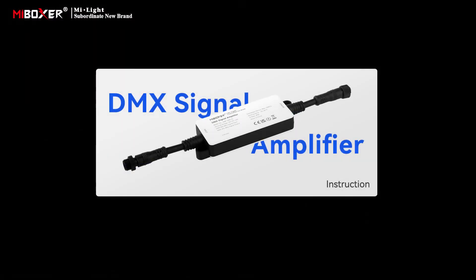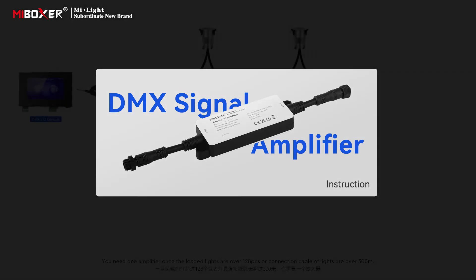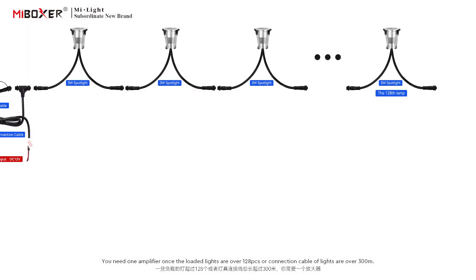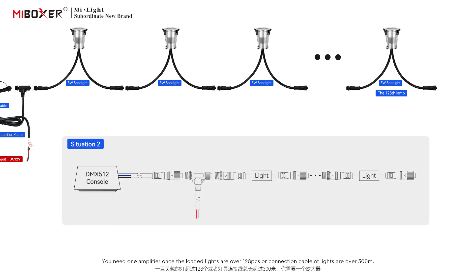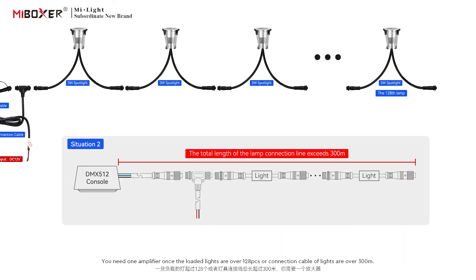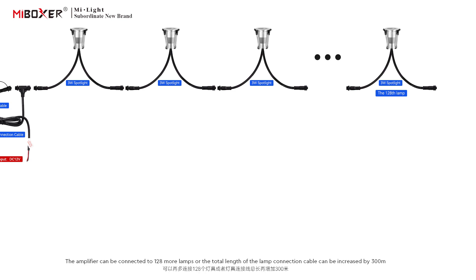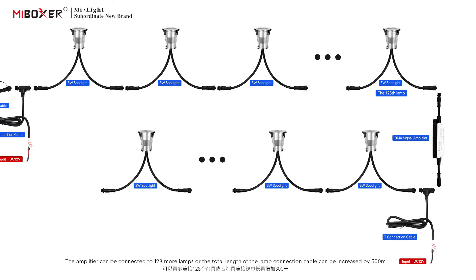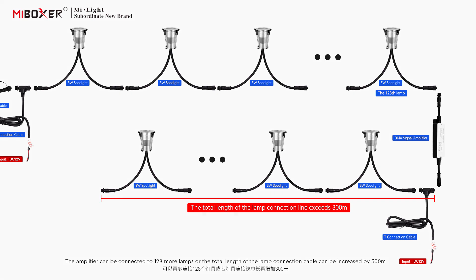For the DMX signal amplifier: you need one amplifier if the connected lights exceed 128 units or the connection cable length exceeds 300 meters. The amplifier can support 128 additional lamps or increase the total length of the lamp connection cable by 300 meters.